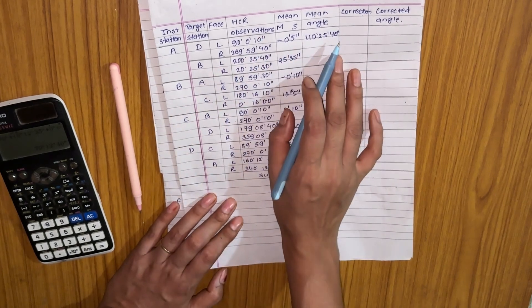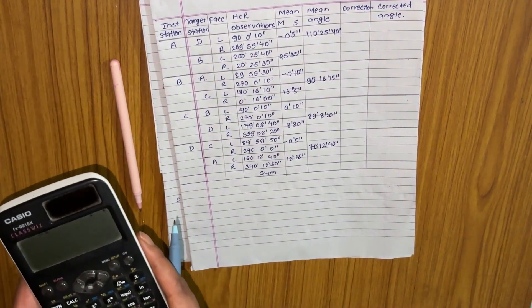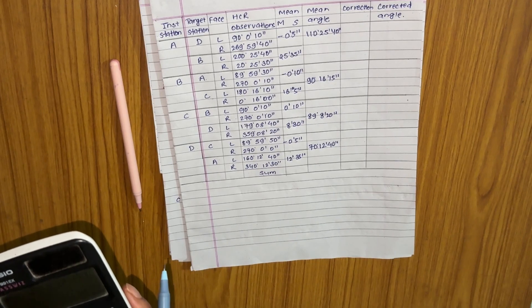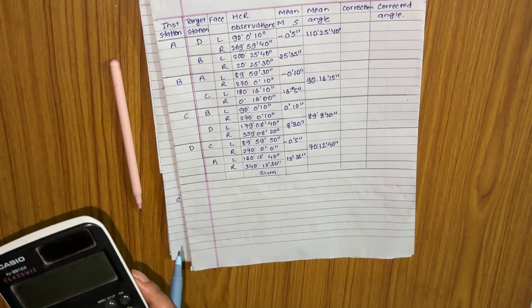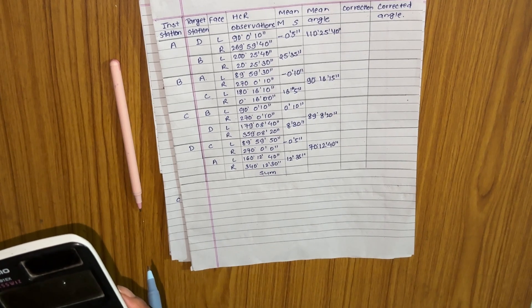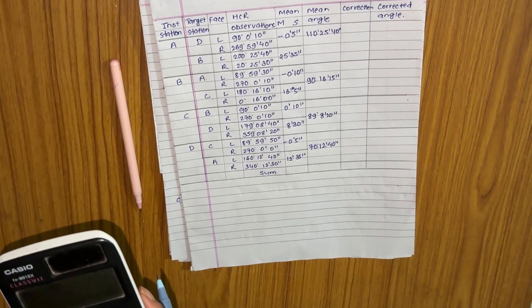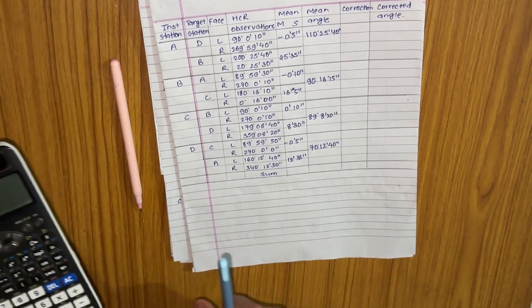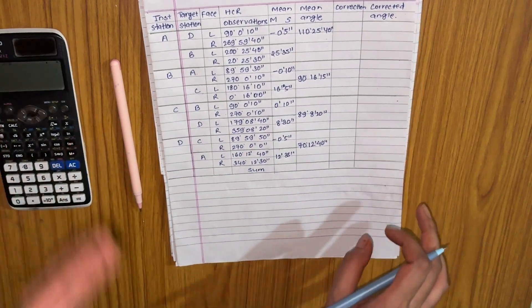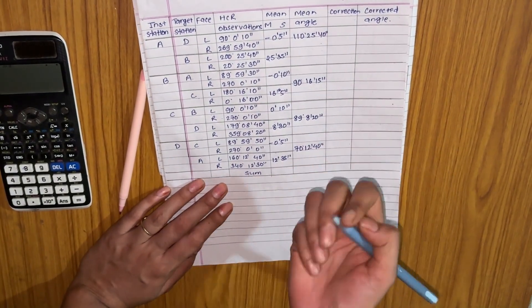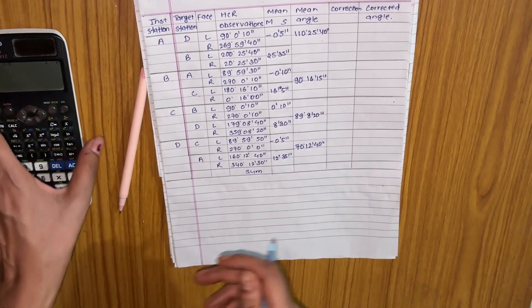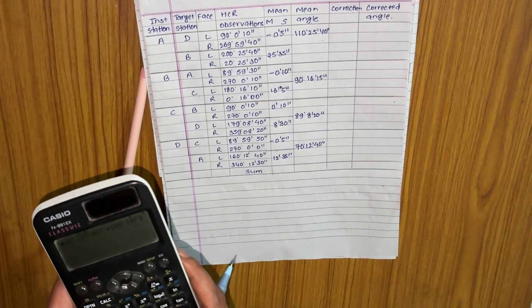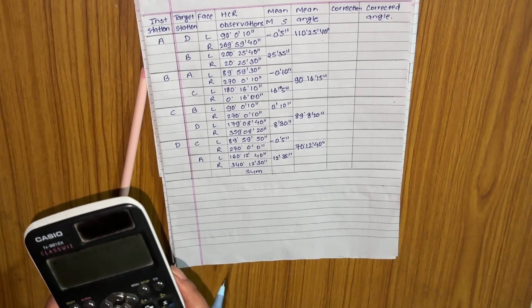To verify the calculation, you can check using the mean angle method: (200°25'40" minus 90°00'10") plus (20°25'30" minus 269°59'40"), then divide by 2. This confirms the mean angle by mean direction method is correct. The sum of all observed angles is 110°25'40" plus 90°16'15" plus 89°08'20" plus 70°12'40", which equals 360°02'55".